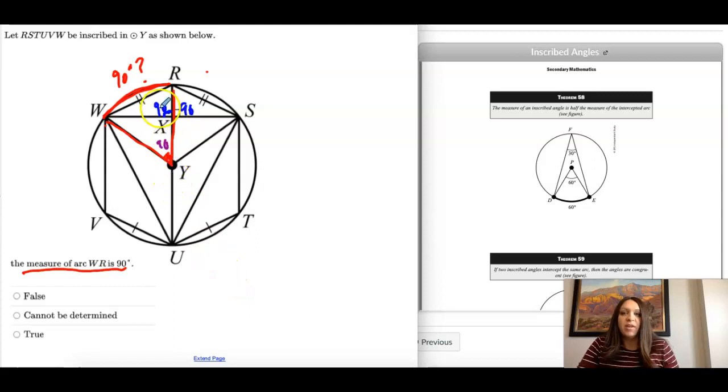So if that is 90, if we can prove that this is 90 degrees, then the answer would be true. If we cannot prove that, then that's false. But we're going to look at our last thing. We know this is a diameter, so we know that that's 90, but that's not really going to help us with this angle because there's not any other diameters. Okay, so for this problem it cannot be determined.